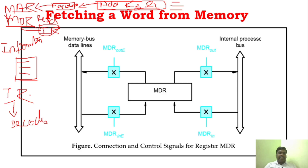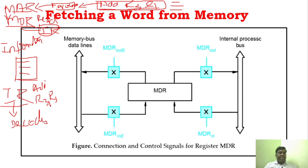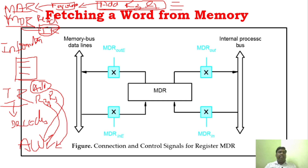After the instruction ADD R3, R1 reaches the IR, execution begins. The processor understands there is an ADD operation, so this information has to be given to the ALU. We also need the data of R3 and R1 — once again it will get the data from the memory and give it to the ALU. This is what we have seen so far.